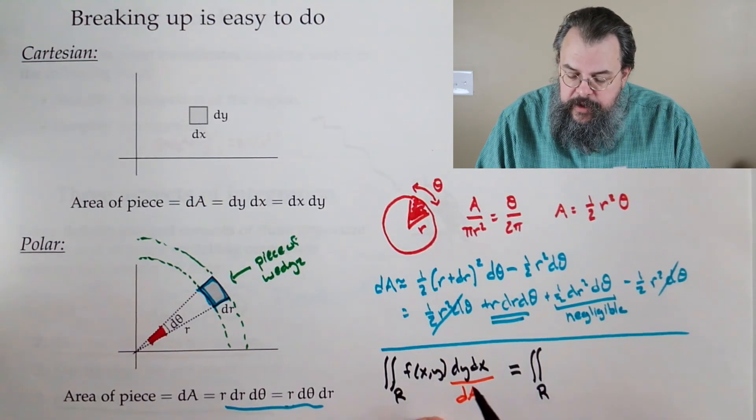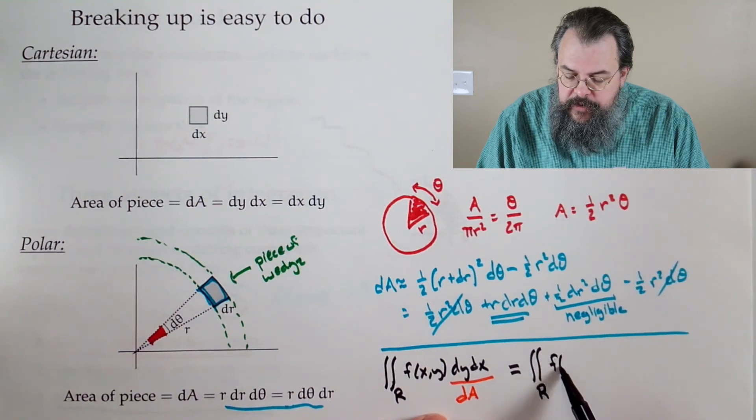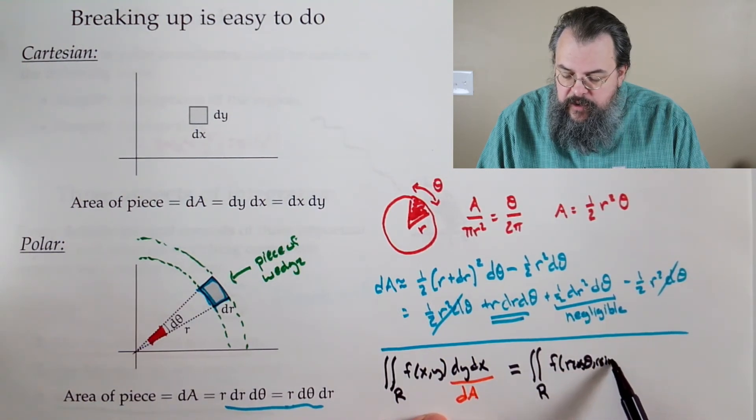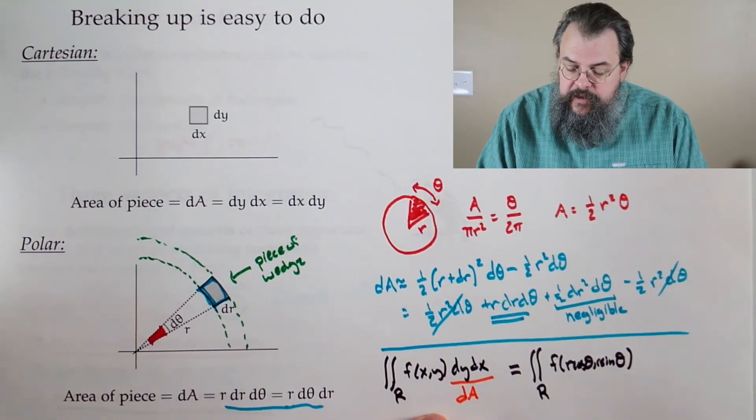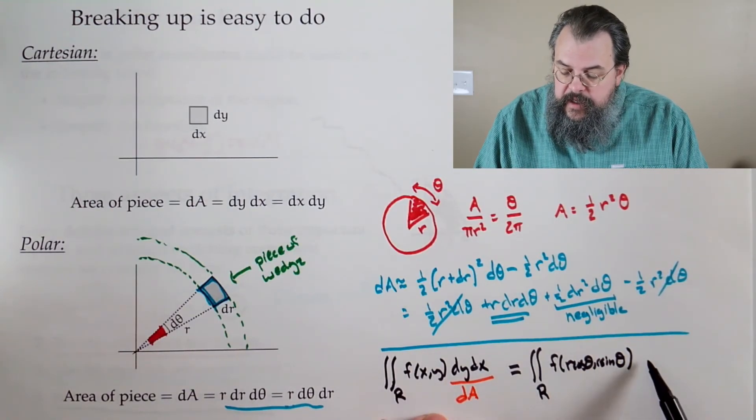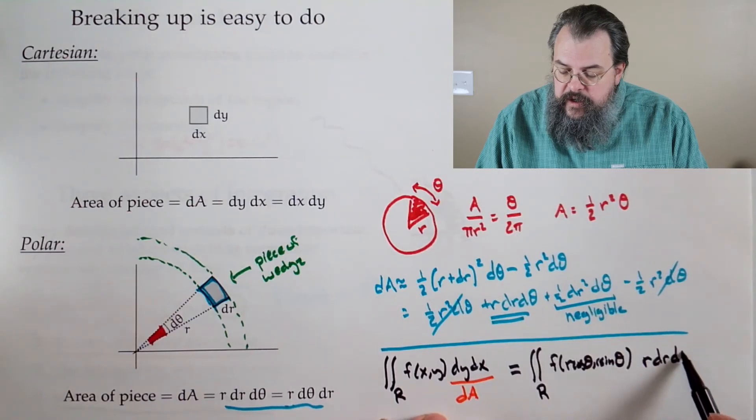And we say, oh, look, our function becomes r cosine theta, r sine theta. So in other words, we are our function in terms of r and theta. And the dy dx, well, that's our dA. That's r dr d theta.